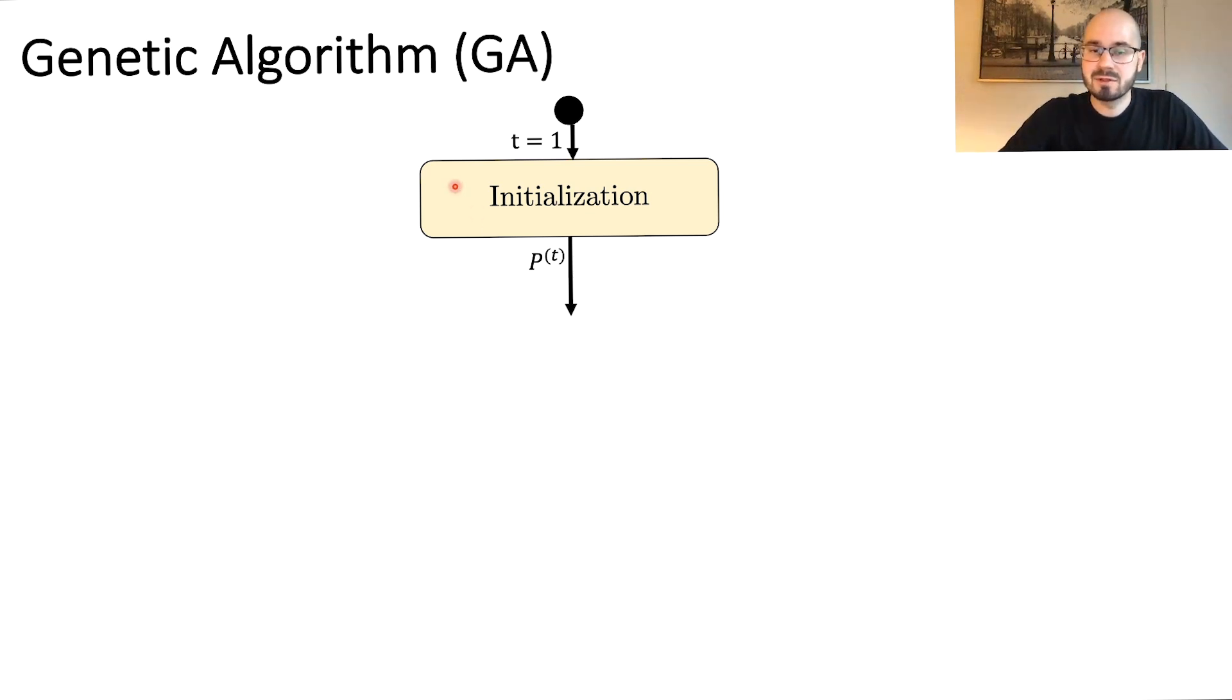So after the initialization has taken place putting out p of t, the initial population, we have the second step which is the evaluation. So we take the population and put it to the evaluator. We are running f of x, our error function.